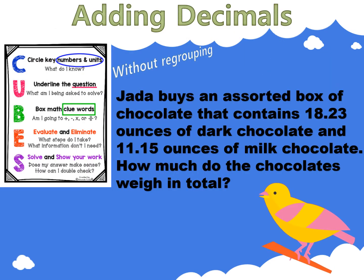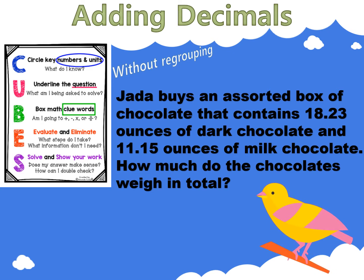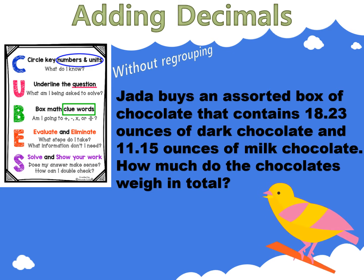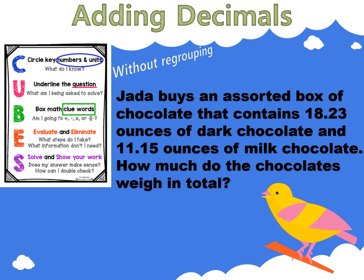Read the problem with me. Jada buys an assorted box of chocolate that contains 18 and 23 hundredths ounces of dark chocolate and 11 and 15 hundredths ounces of milk chocolate. How much do the chocolates weigh in total?